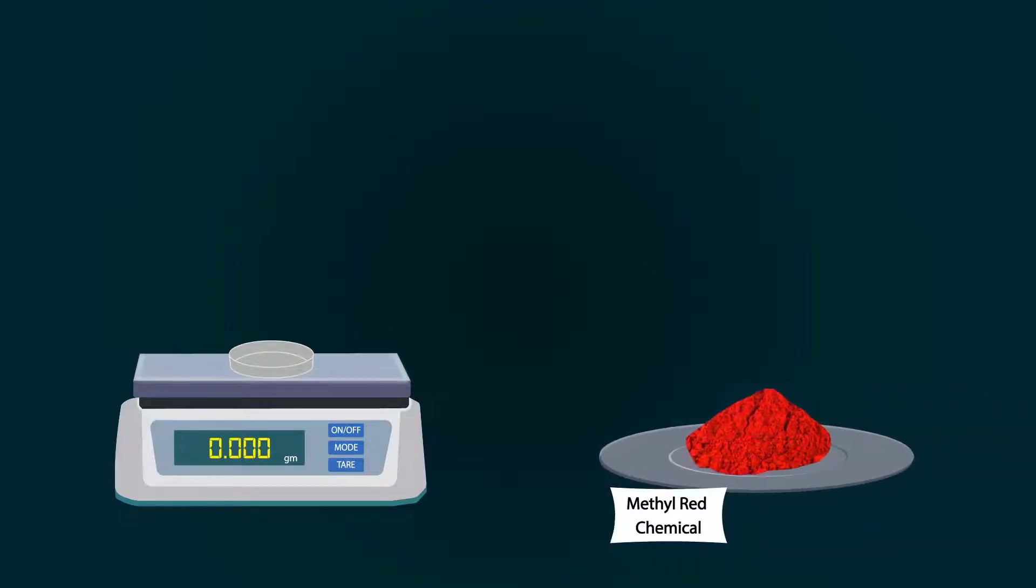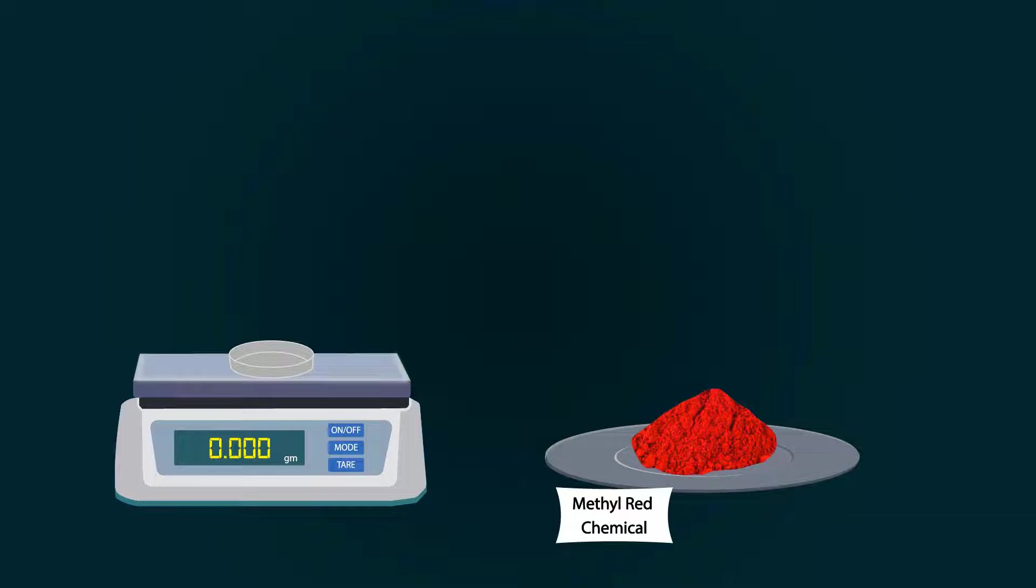Now take methyl red chemical from the stock bottle. You can put methyl red into the petri dish with the help of a spatula. Weigh precisely up to 1 gram.